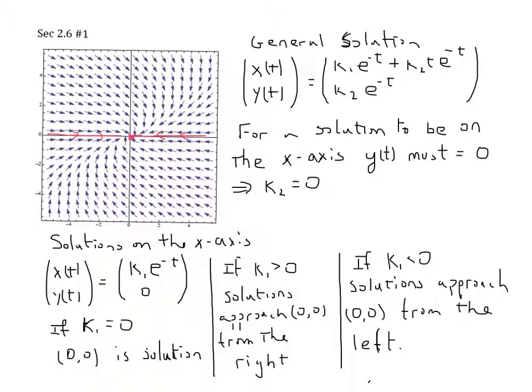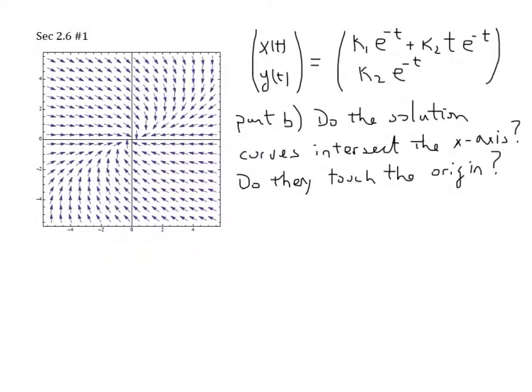The last part of this problem says to use HPG solver, sketch the solution curves for a number of initial conditions above and below the x-axis. Do these curves intersect the x-axis? Do they touch the origin? Justify your answer. The problem asks do the solution curves intersect the x-axis. Well, to intersect the x-axis, the y-value would have to be 0.